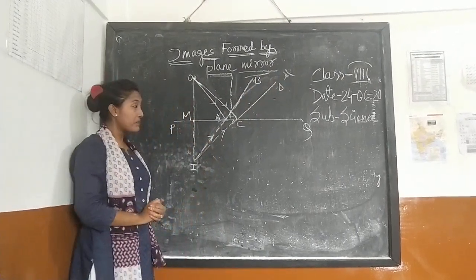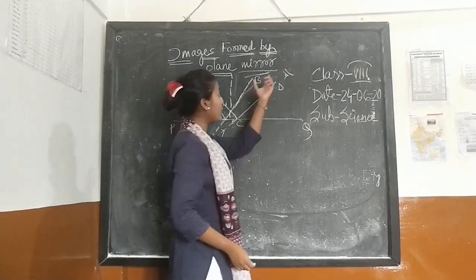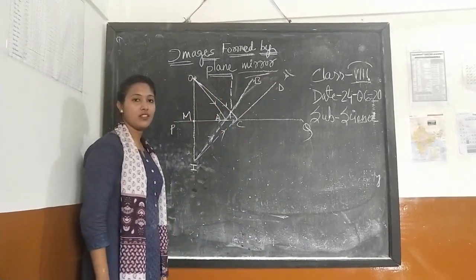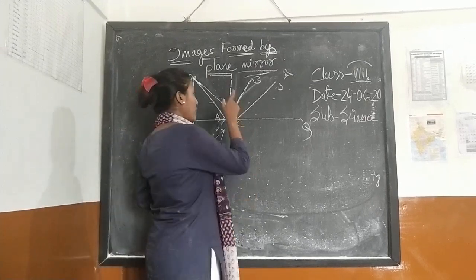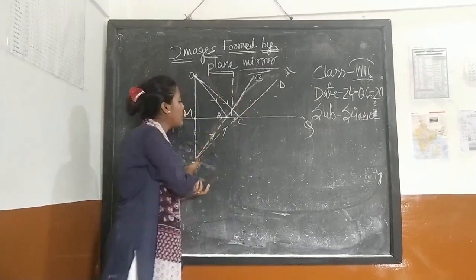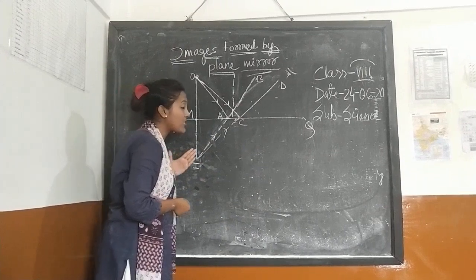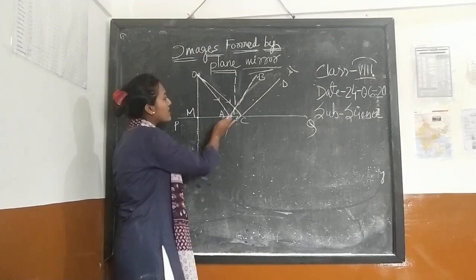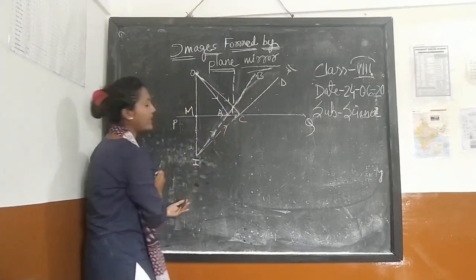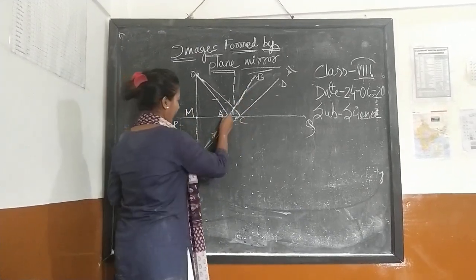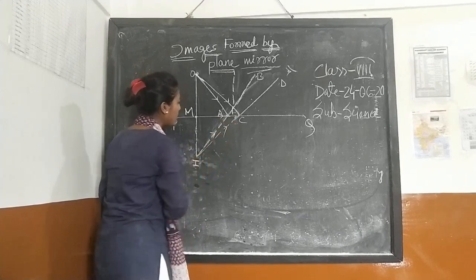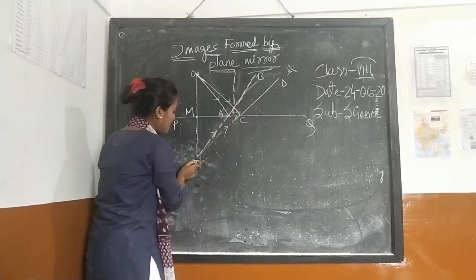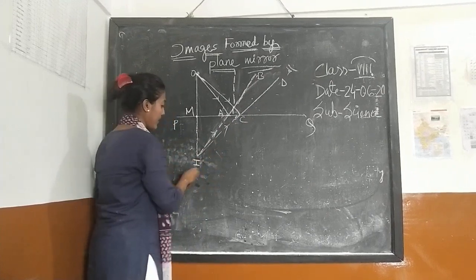Now tell me students — is it possible for human eyes to see that track? Not possible. Human eyes always see the image whenever light comes from a straight line. So we have to produce the reflected ray behind the mirror. It's imaginary light, and the reflected rays meet at a point behind the mirror — that point is I.